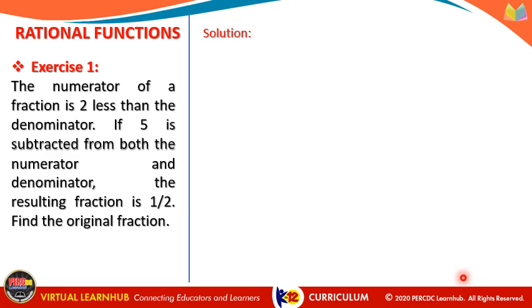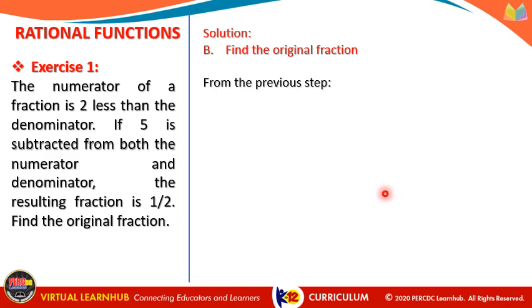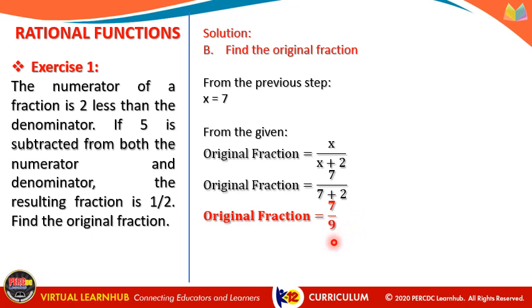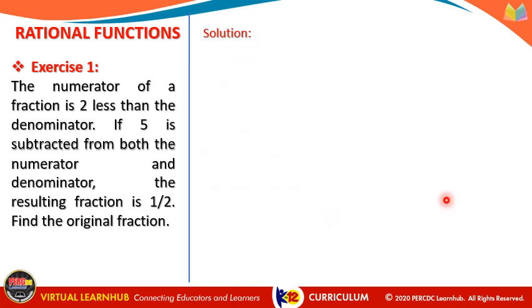Now that x = 7, we substitute into the original fraction: x/(x + 2) = 7/(7 + 2) = 7/9. Therefore, the original fraction is 7/9.